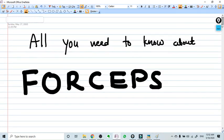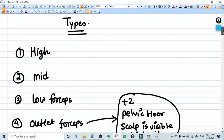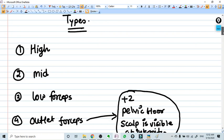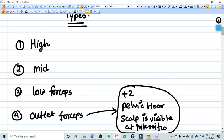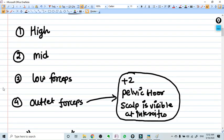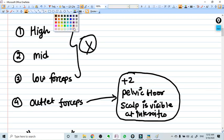In this video we are going to see about forceps. This video contains almost all information you need about forceps in obstetrics. Now there are four types of forceps: high forceps, mid forceps, low forceps, and outlet forceps. These three things you don't need to remember, so don't waste time on it.